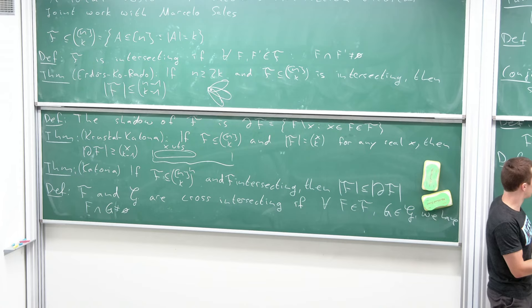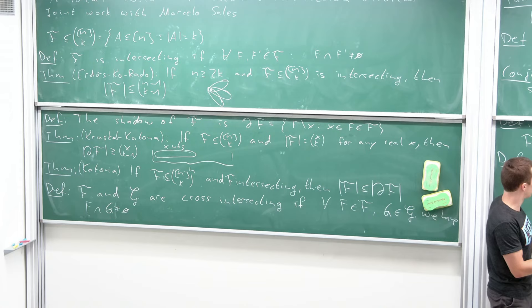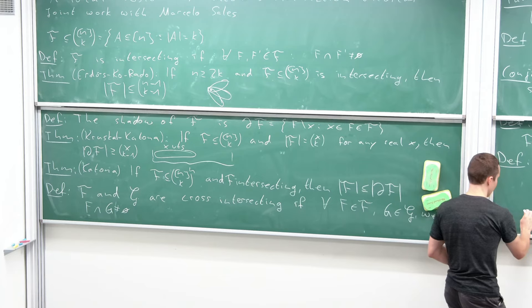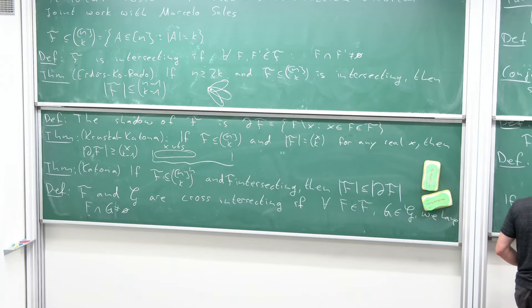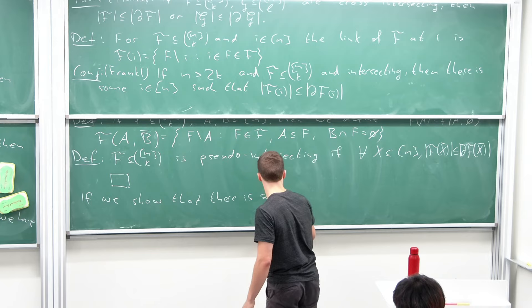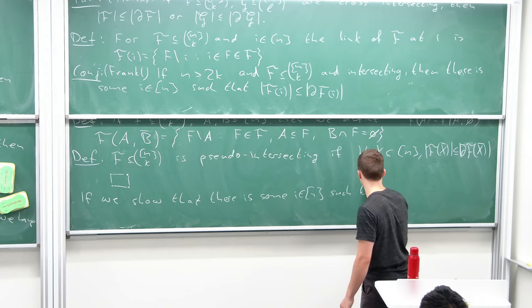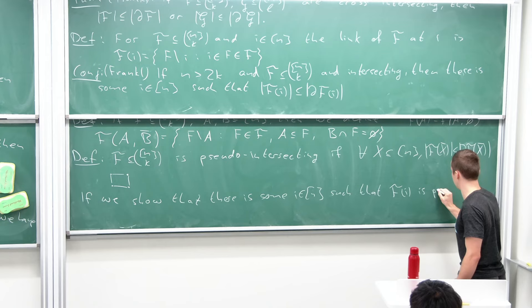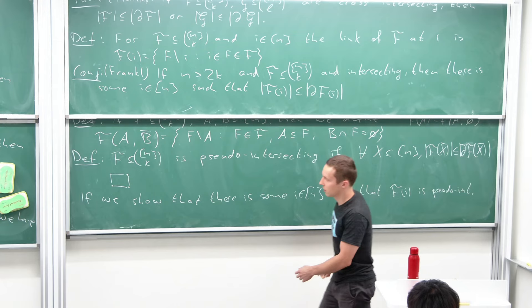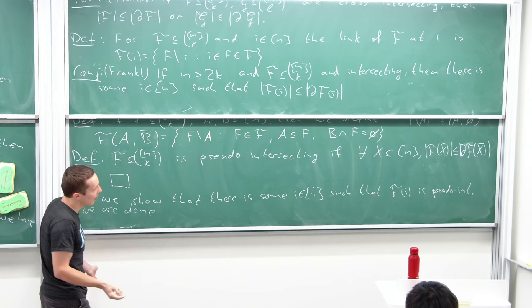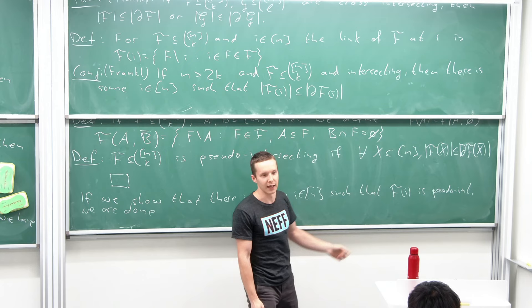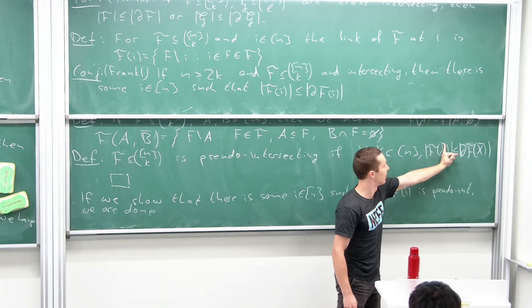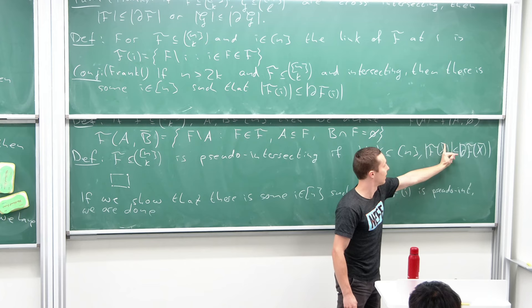If we can show that there is some link F(i) that is pseudo-intersecting, we are done. Because pseudo-intersecting in particular means we can choose the forbidden part to be the empty set, and then F(i, empty-bar) is just F(i), so the conjecture holds.